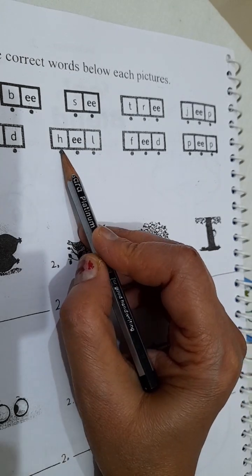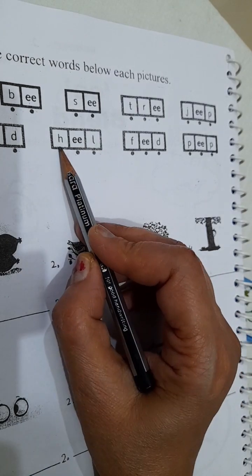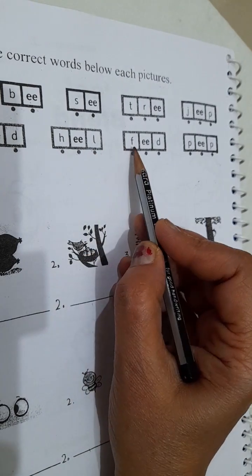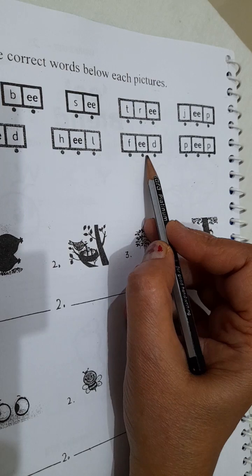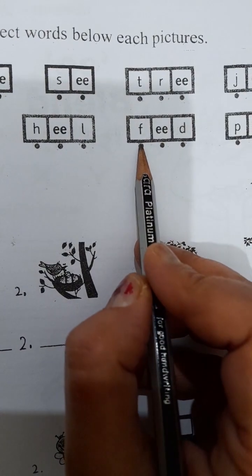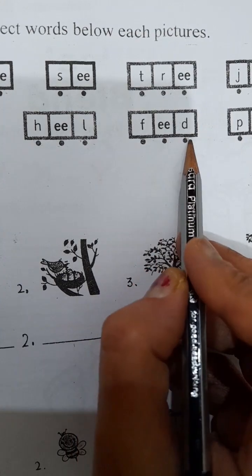Sound of letter H is H. H, E, E, L, heel. F, E, E, D, feed. How to read this word? F, E, E, D, feed.